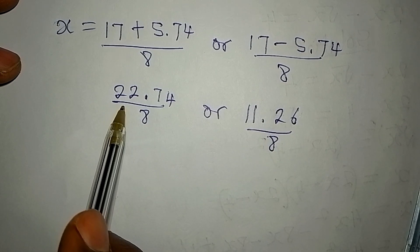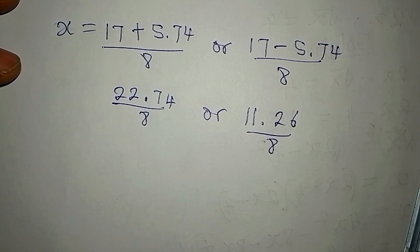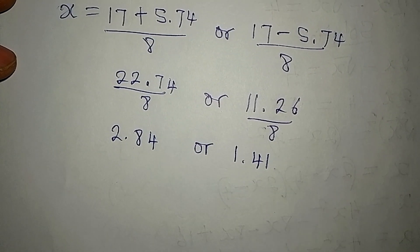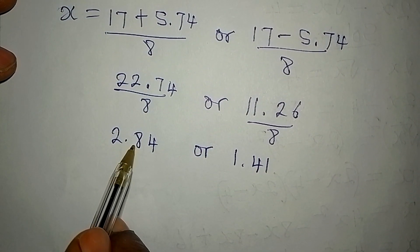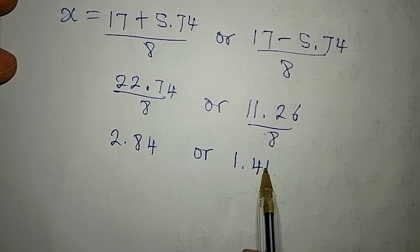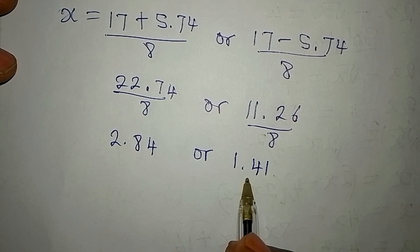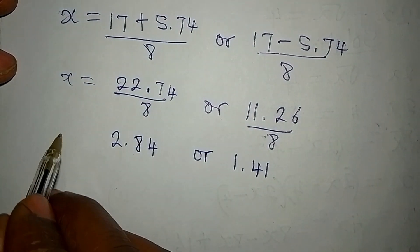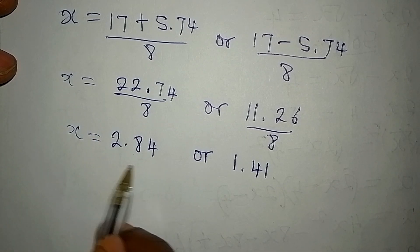Now, let's divide 22.74 by 8 very quickly. When you divide this, you have this. 11.26 divided by 8 will give us 1.41. So, x is equal to this, and x is still equal to this.